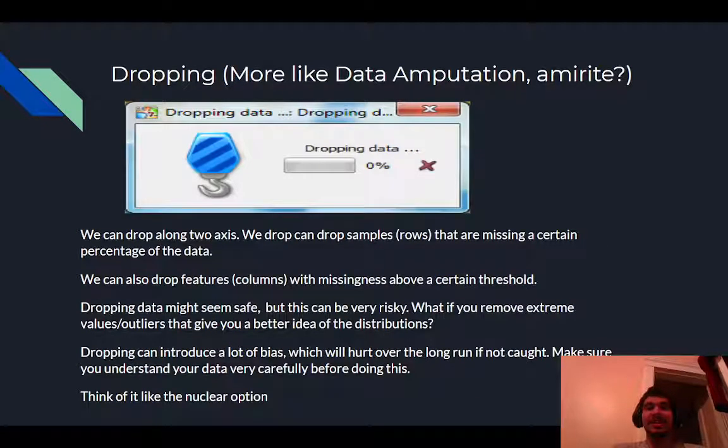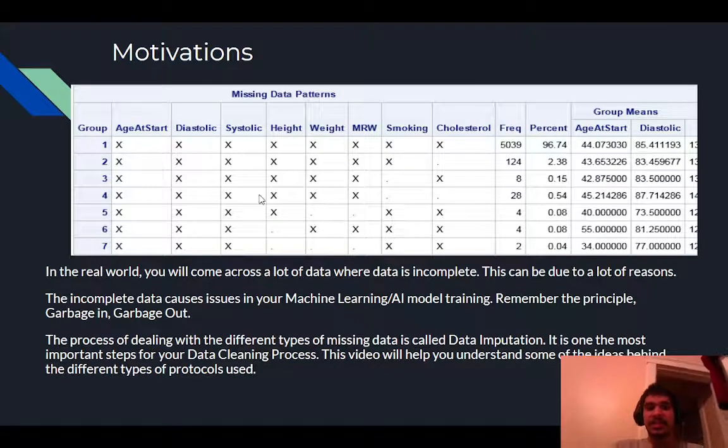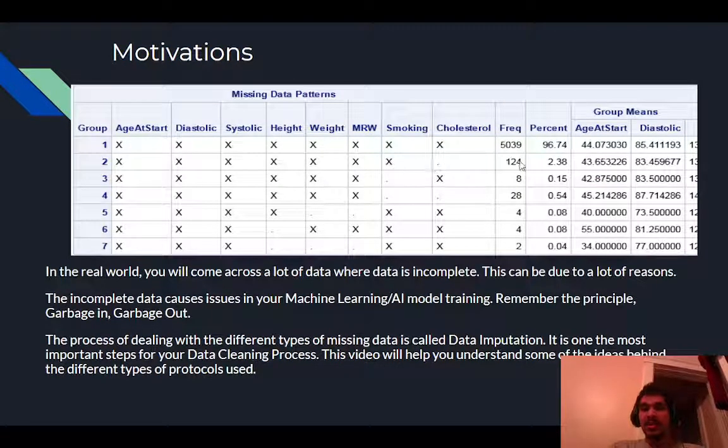So let's get into it. The first bit is more like data amputation instead of imputation. Because this is the simplest thing to do, which is you just drop whichever data points are missing. You can do two things. We can drop either the samples or the columns, which are the features. So in this case, we could say that row number two is missing cholesterol. So we just won't feed in row number two to our machine learning model.